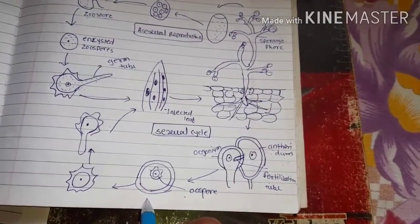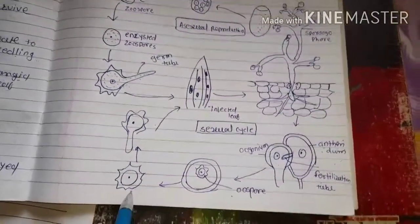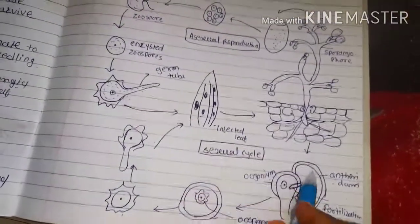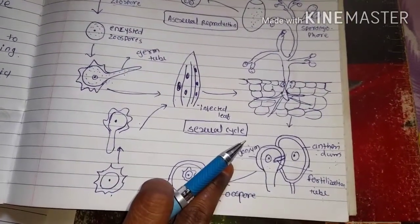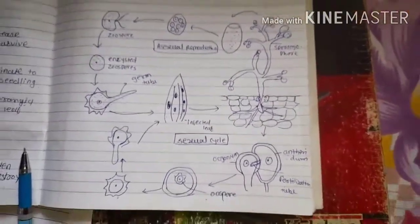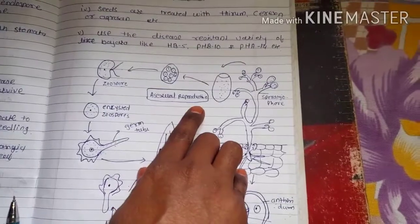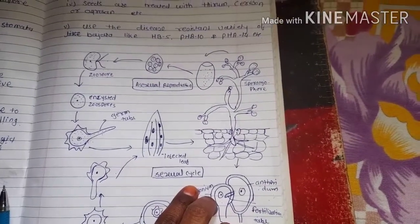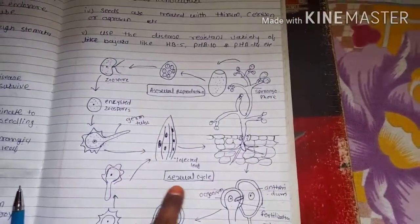After formation, the protective wall breaks and the oospore migrates to a healthy normal leaf, and the cycle is repeated. This is the sexual cycle of the green ear of Bajra. On favorable conditions, both the asexual reproduction cycle and the sexual reproduction cycle are completed.